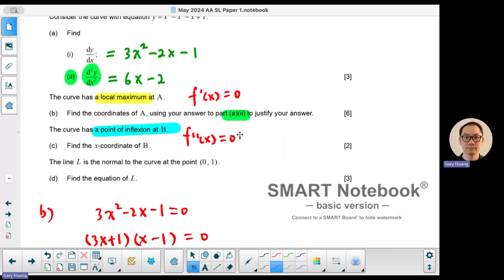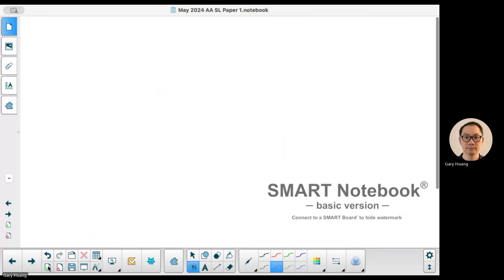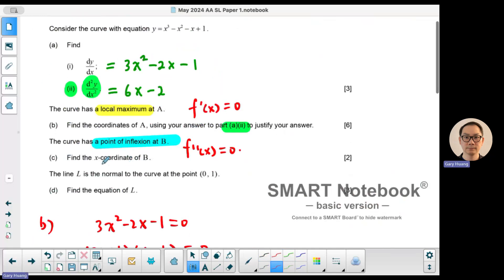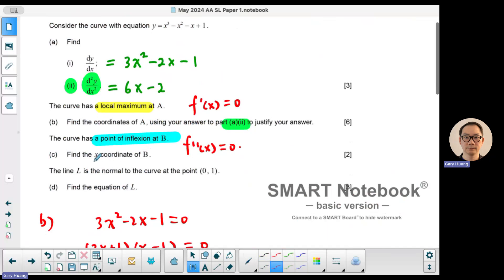So the second derivative is 6x - 2. So this is part C. So 6x - 2 is equal to zero. 6x equals 2. x is equal to 1/3. So that's the point where you have an inflection. And they're only looking for the x coordinate. So that's all I have to do.